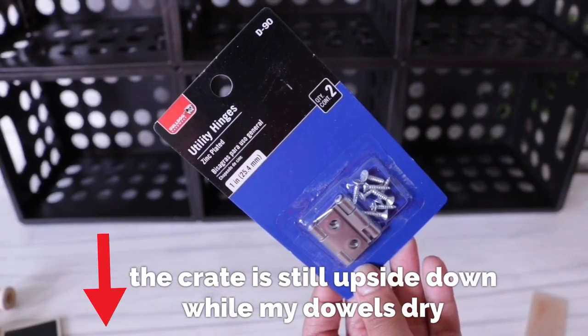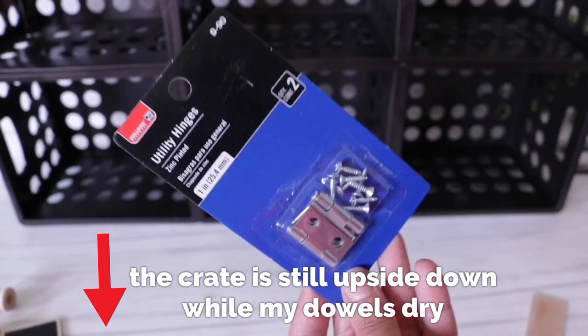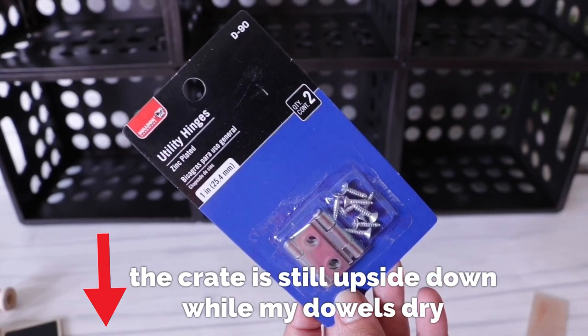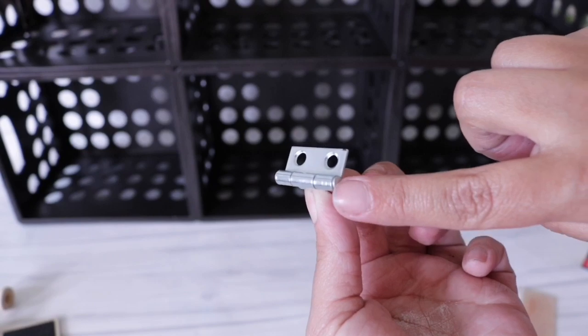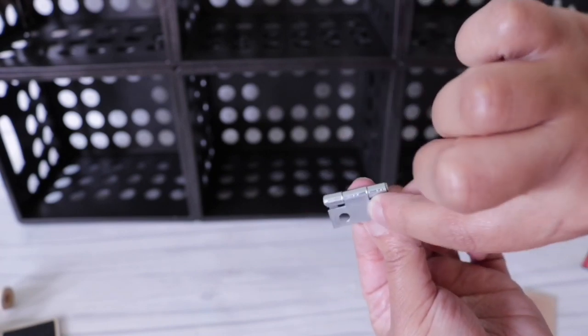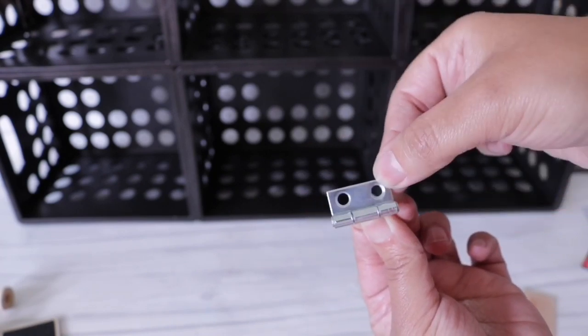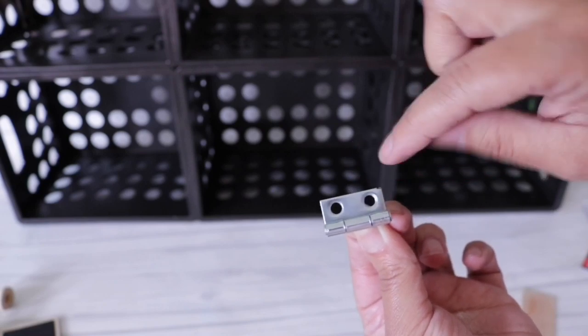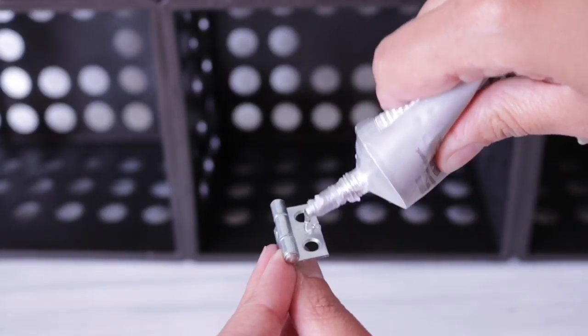By the way my crate is still upside down letting the feet dry and while it's upside down I decided to add utility hinges. This I got for 97 cents at Walmart and you want this part facing you and this part going into the crate. So you want it to open all the way and then stop right there so the doors have a place to stop and when you have these in your hand you're definitely going to see what I'm talking about.